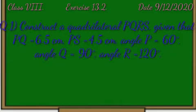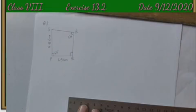Construct a quadrilateral PQRS given that PQ equal to 6.5 cm, PS equal to 4.5 cm, angle P equal to 60 degree, angle Q equal to 90 degree, and angle R equal to 120 degree.